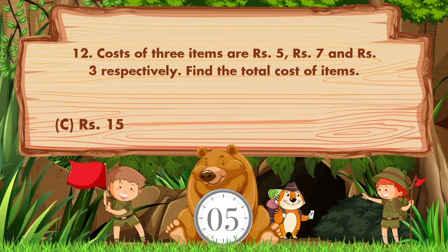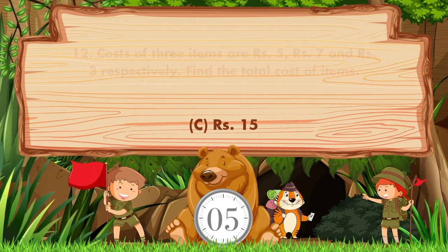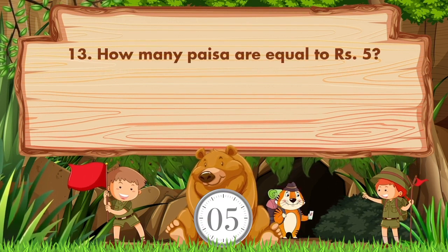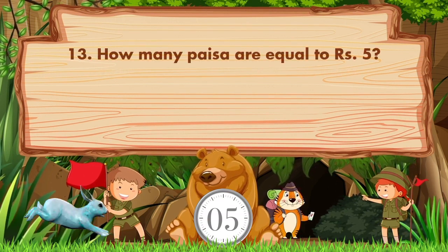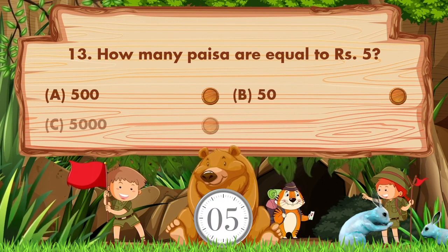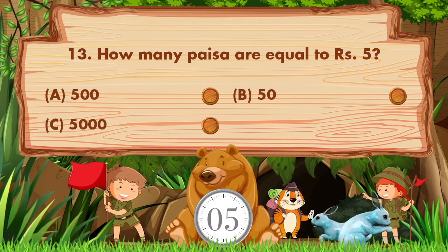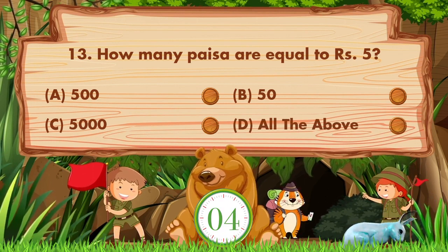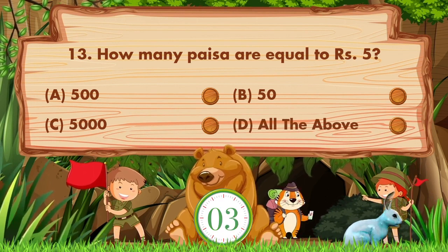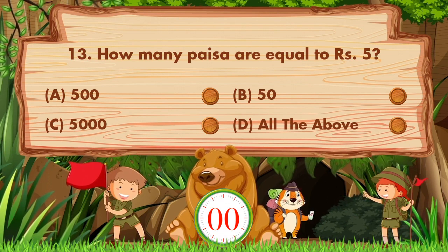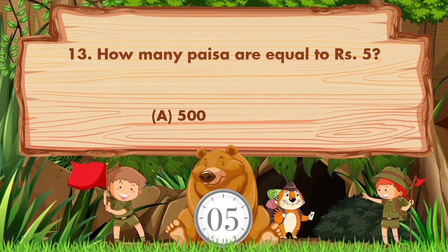The answer is option c: 15 rupees. How many paisa are equal to 5 rupees? Option a is 500, option b is 50, option c is 5000, option d is all the above. The answer is option a: 500.